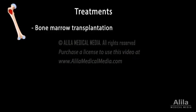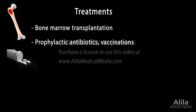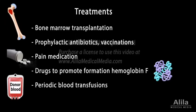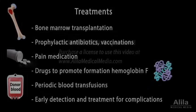Bone marrow transplantation is currently the only known cure for sickle cell disease. It involves replacing the diseased stem cells in the bone marrow with healthy cells from an eligible donor, usually a relative. The procedure, however, is complex and finding a suitable donor can be difficult. In most cases, treatments aim to avoid crises, relieve symptoms, and prevent complications. These include prophylactic antibiotics and vaccinations to prevent infections, pain medication to relieve pain, drugs that promote formation of fetal hemoglobin to suppress sickling, periodic blood transfusions to reduce anemia and prevent crises, and early detection and treatment for complications when these occur.